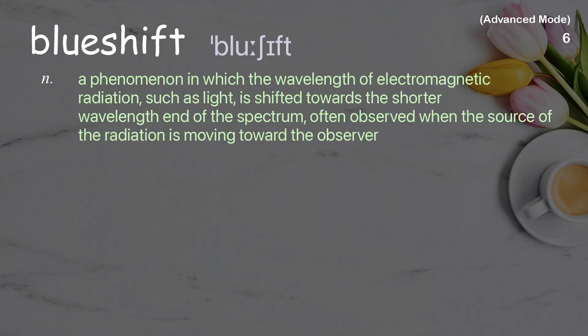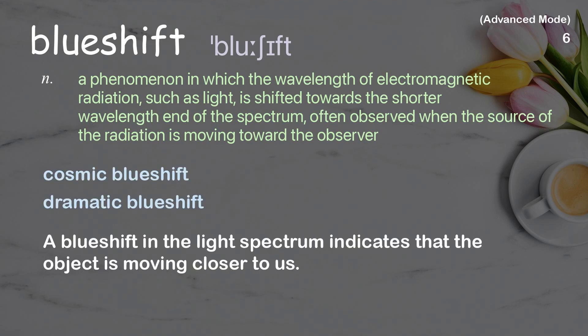Blue shift. A phenomenon in which the wavelength of electromagnetic radiation, such as light, is shifted towards the shorter wavelength end of the spectrum, often observed when the source of the radiation is moving toward the observer. Examples: cosmic blue shift, dramatic blue shift. A blue shift in the light spectrum indicates that the object is moving closer to us.